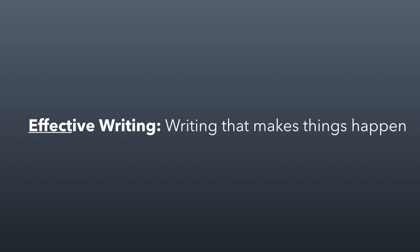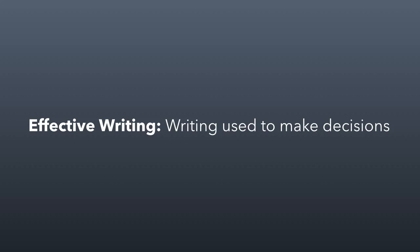Another way to think about that — and this is especially important for you and your career paths — effective writing is essentially writing used to make decisions. Probably everything you write will be used by somebody in some way to make a decision about something. When you realize that, when you come to the conclusion that your writing is going to be used for decision making, it should influence the way you write, because you're writing usually to encourage one decision over another. And that ought to have the intended effect. So that's what I mean by effective writing: writing used to make decisions, or writing used to produce a particular outcome.